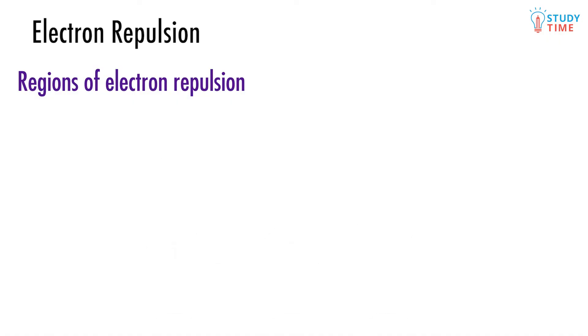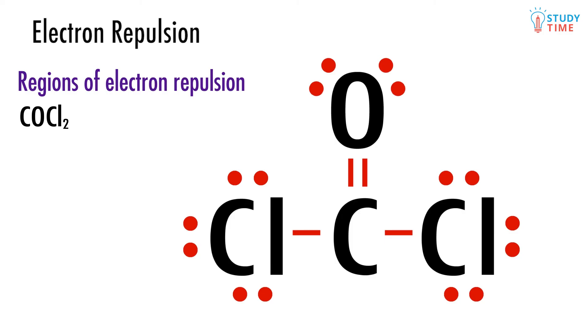Now, let's look at something different. A molecule of COCl2. Forget about the fact that some of the bonds around the carbon are single bonds, and some of them are double bonds. Just count the number of regions of electron repulsion, and you'll realize that it's three.